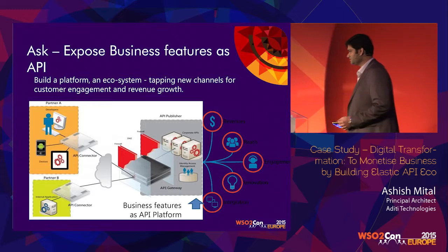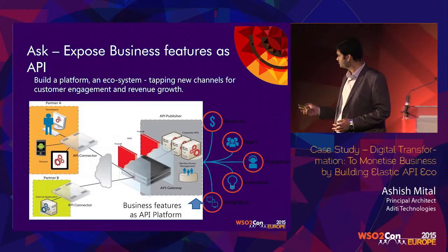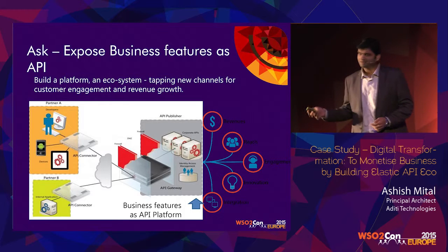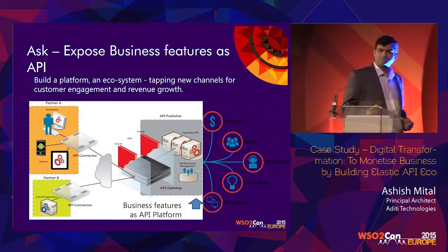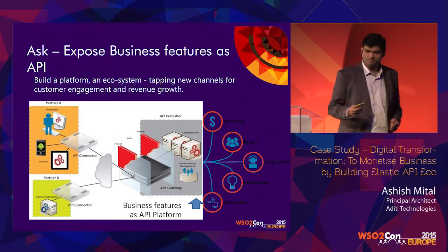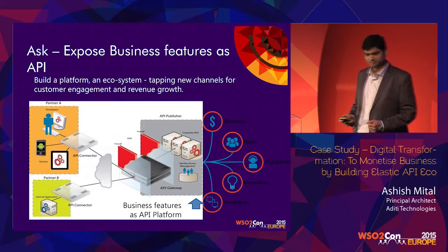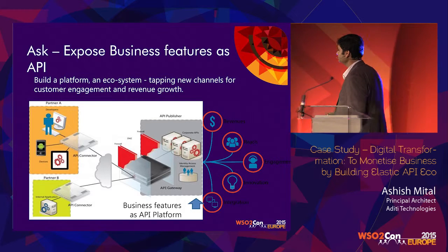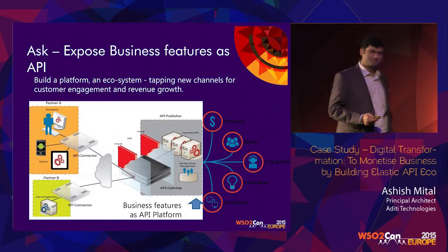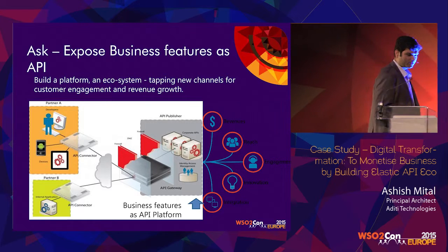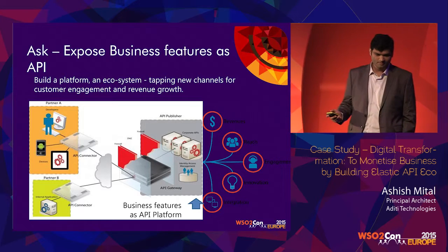So let's recap: you have business features, a platform which exposes those features as APIs, which lets you connect to your partners who incorporate your features in their platform — and when they do, your cash register rings. So you have increased revenue opportunities, increased customer outreach, and innovative and integrated engagement with your customer.